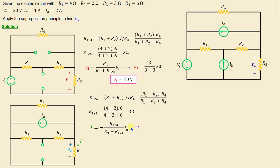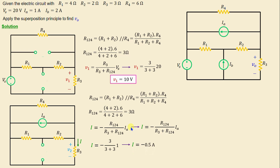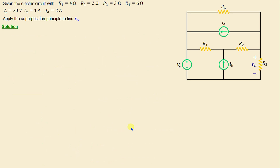Replacing the resistors and the current with their numerical values, we obtain i = −0.5 amps. According to Ohm's law, the voltage V2 = R3 × i. Replacing R3 and i with their numerical values, we obtain V2 = −1.5 volts.